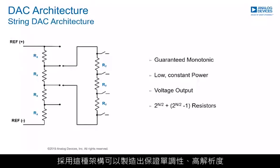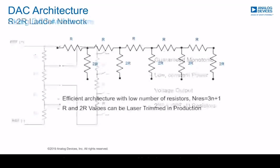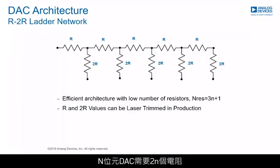This architecture allows the manufacture of guaranteed monotonic, high-resolution, low constant power, voltage output DACs in space-saving surface mount packages. The most common DAC structure is the R-2R ladder. It uses resistors of only two different values with a ratio of 2 to 1. An N-bit DAC requires 2N resistors and they can be laser trimmed in production.